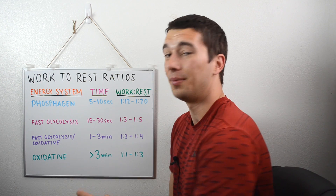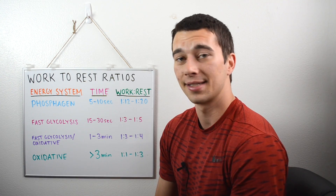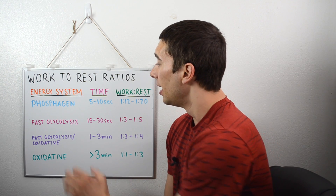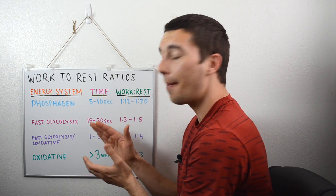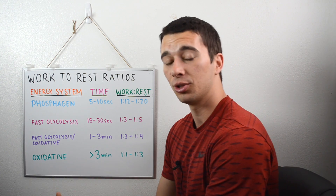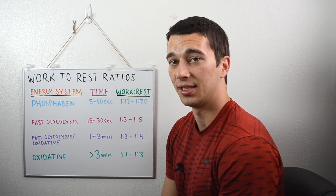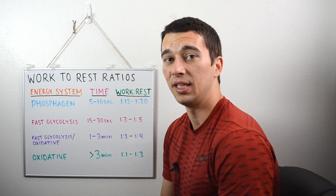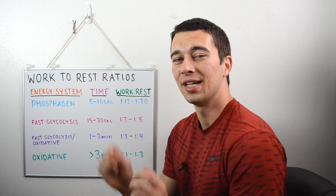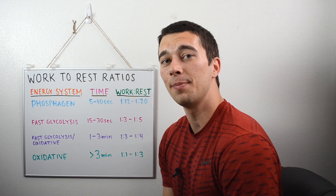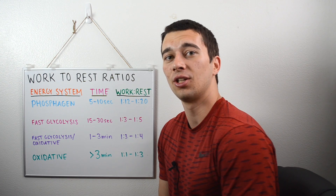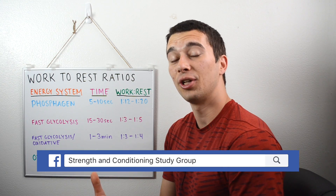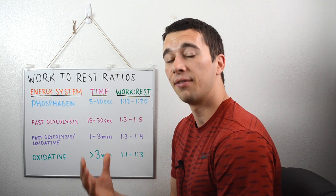Just to overview: the phosphagen system is the primary energy system for efforts less than 10 seconds. Fast glycolysis — anaerobic glycolysis — gives most energy for 15 to 30 second efforts. For one to three minute efforts, a combination of oxidative and fast glycolysis supplies most ATP to the muscles. For efforts greater than three minutes, most energy comes from oxidative means — the Krebs cycle and oxidative phosphorylation. Links to more information on those are in the description. If you found this useful, hit the like button, subscribe for more strength and conditioning videos, and click the link below to join the strength and conditioning study group on Facebook, where we cover CSCS practice questions and weekly Facebook lives.